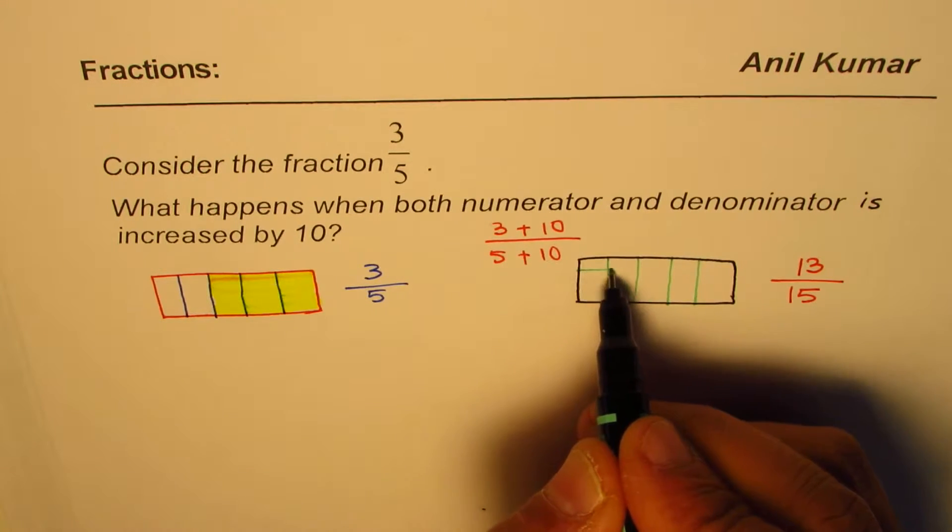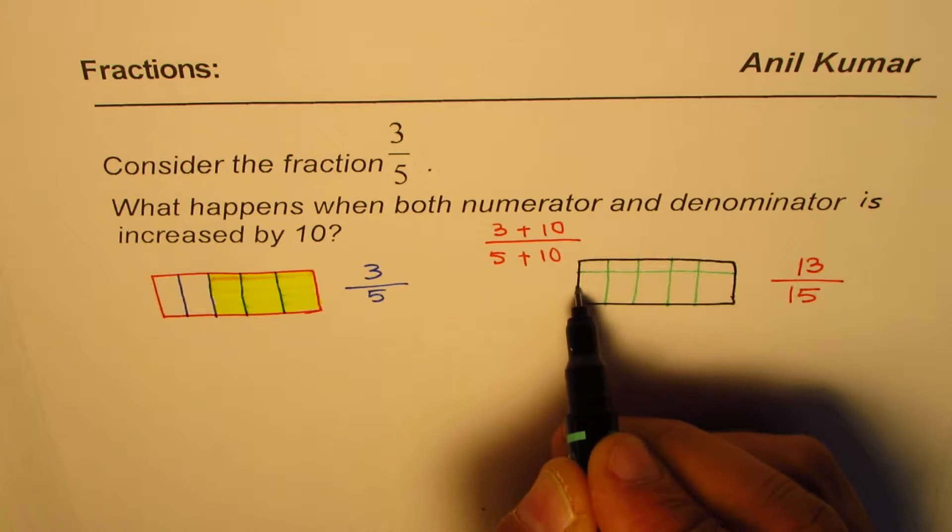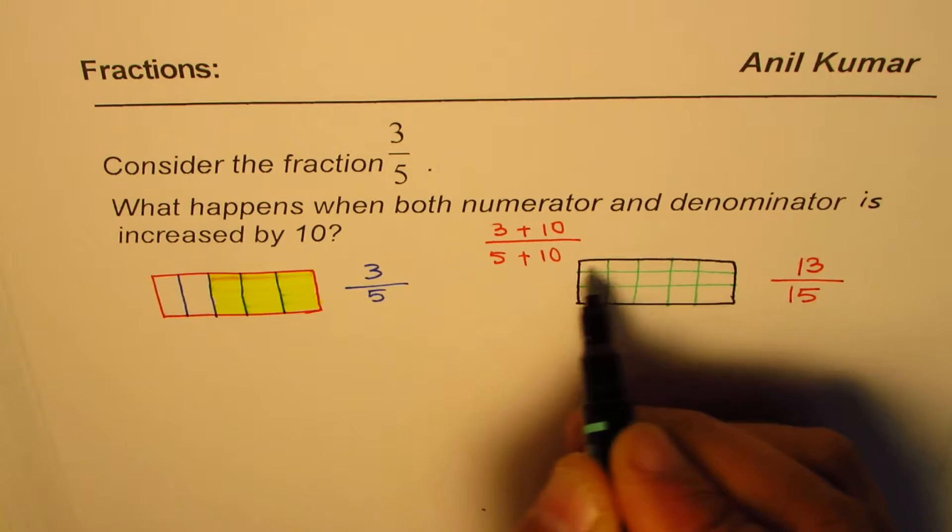Now we could divide like this, smaller pieces, right? So 1, 2, and 3. So that makes 15, right?